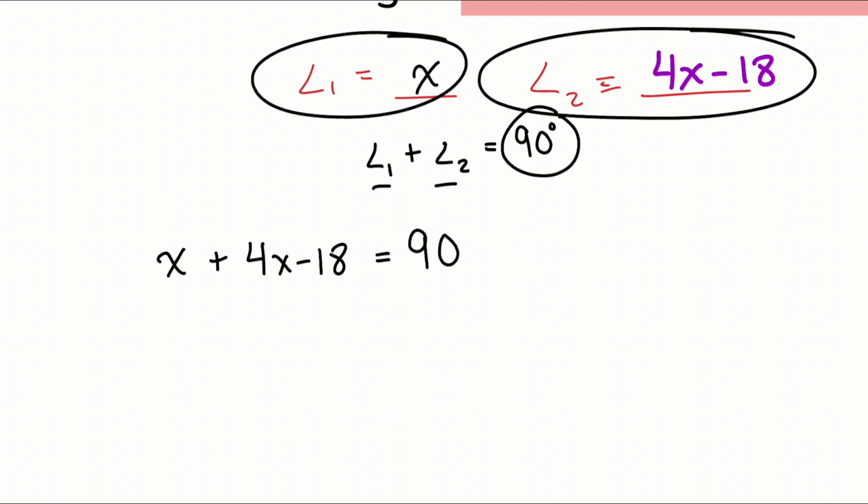We can find that first angle super straightforward, super easy, because what we're going to do now is we're going to combine like terms X and 4X. That'll go ahead and give us 5X. We still have the minus 18 equals 90.